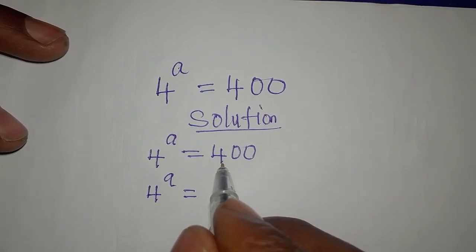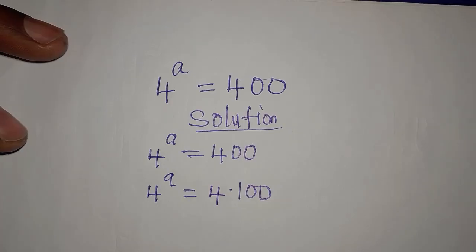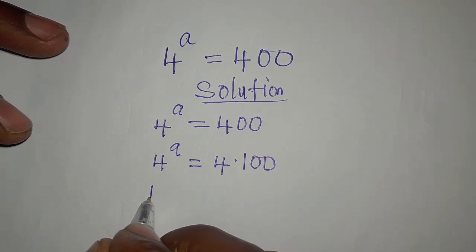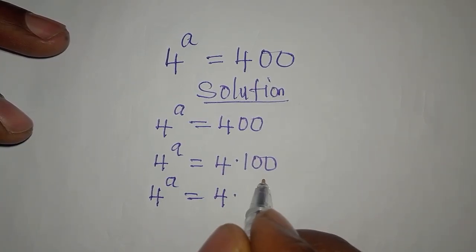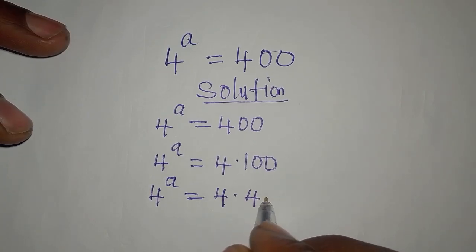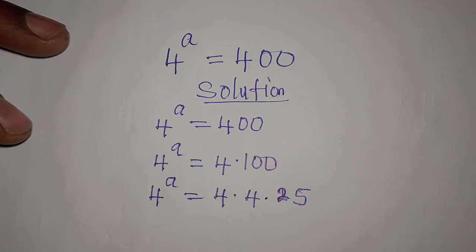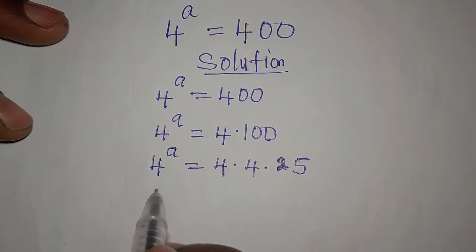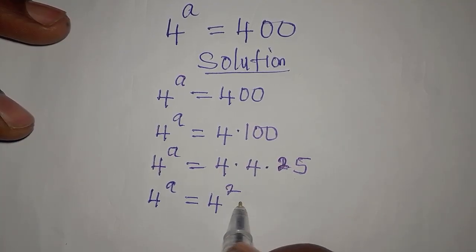4 can go into 400, so we'll have 4 times 100 in place of 400. Then 4 can also go into 100, so we have 4 times 25. So 4 times 4 times 25 equals 400. Since 4 can no longer go into 25, we simplify: 4 to the power of a equals 4 to the power of 2, multiplied by 25.